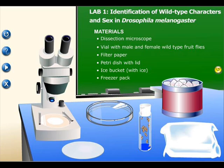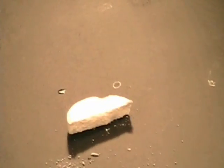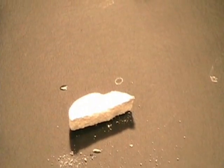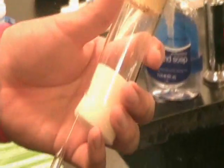Though the lab manual directs you to anesthetize the flies by chilling them, a safer and more efficient method is to knock them out temporarily with CO2. The Alka-Seltzer tablet produces enough CO2 to keep the flies down for about a minute.